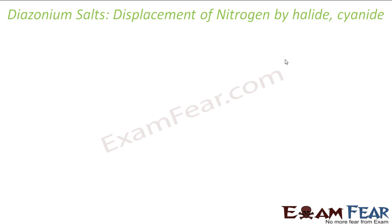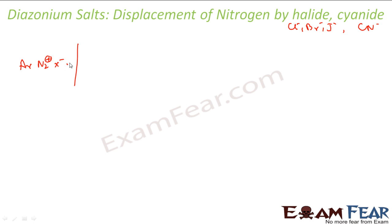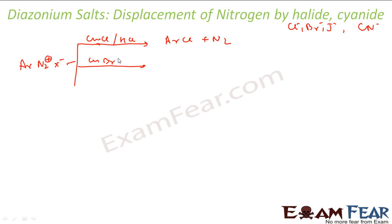Let's talk about replacement by halide or cyanide. Halide is Cl minus, Br minus, I minus. The typical reaction: I have ArN2+ X minus — this is my general formula of an aromatic diazonium salt. If I react this with CuCl and some HCl, what I get is ArCl and N2 gas. So the Cl minus is replacing the whole N2X group, N2 goes off, and Cl takes its place. If I react with CuBr and HBr, I will get bromobenzene and nitrogen gas goes off.